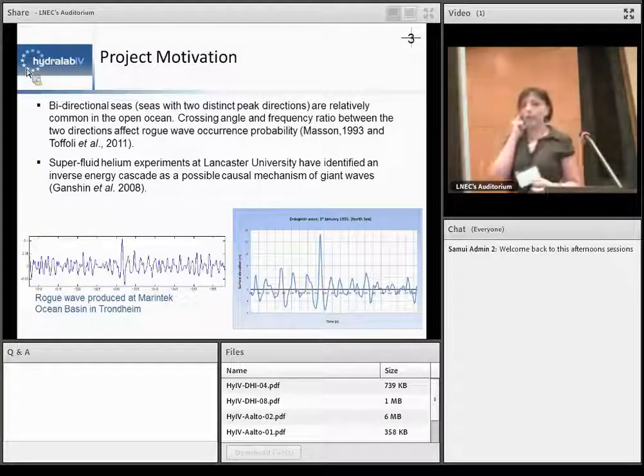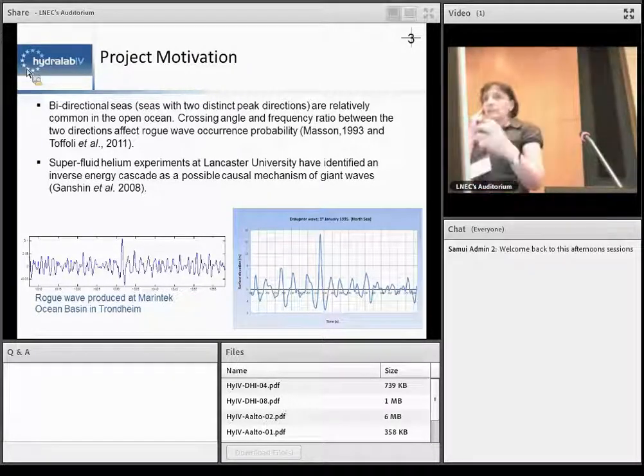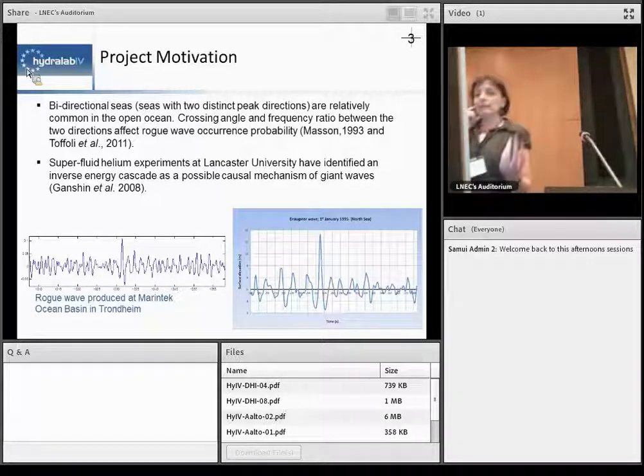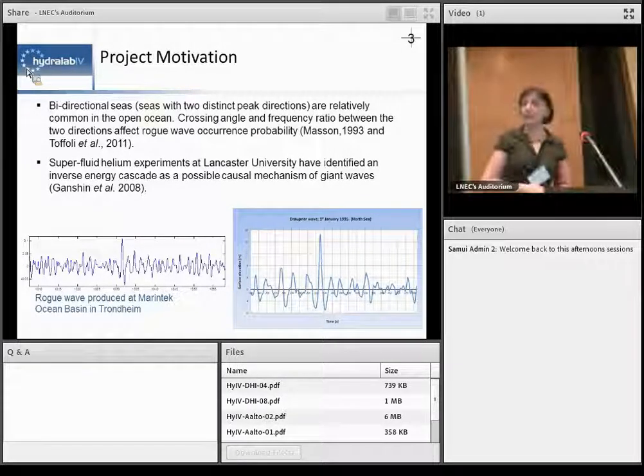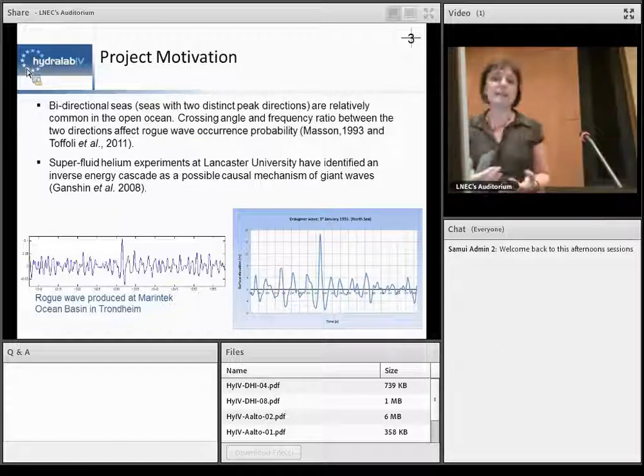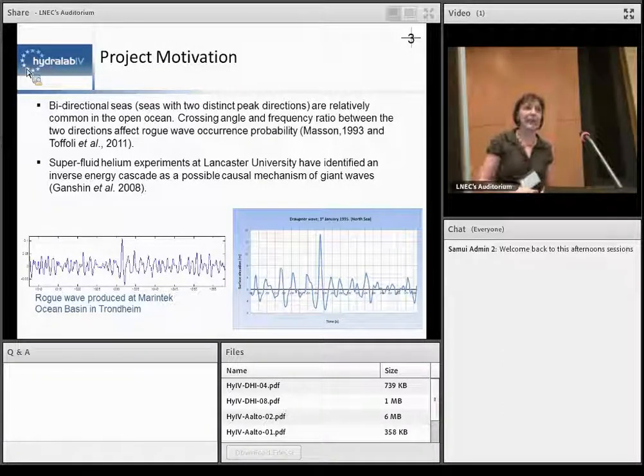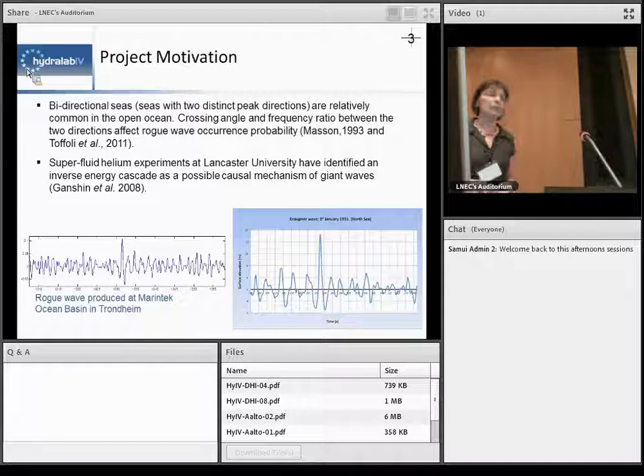So this is kind of interest that we are looking at and we have also interest from the physicists who are in Lancaster, who did experiment in superfluid helium, looking at the formation of waves there, rogue waves there, by indicating that the inverse energy cascade is a possible mechanism. So what does it mean is actually that we have a downshift of energy from the main frequency as your main carrier into lower frequencies. That's what they call inverse energy cascade.